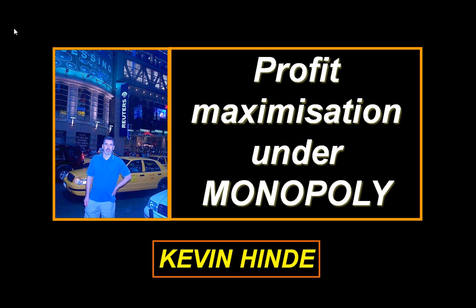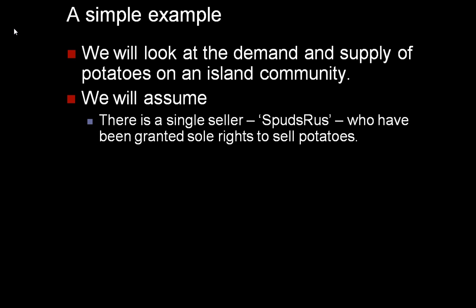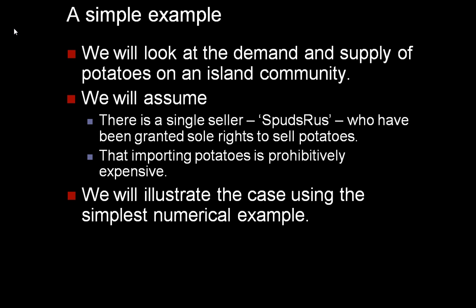We will illustrate using a simple example. In this example, we will examine the demand and supply of potatoes on an island community. We will assume that the local council has awarded a single license to trade in potatoes to a company called Spuds R Us. Moreover, we will assume that any seller on a neighbouring island would find it prohibitively expensive to transport and sell potatoes direct to consumers. In other words, Spuds R Us has a monopoly in the supply of potatoes.